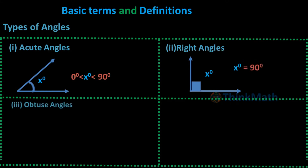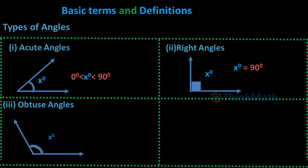3. Obtuse Angle: An angle x, where 90° < x° < 180°, is called an obtuse angle.